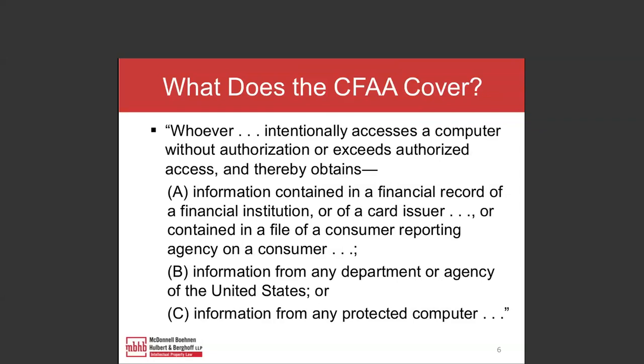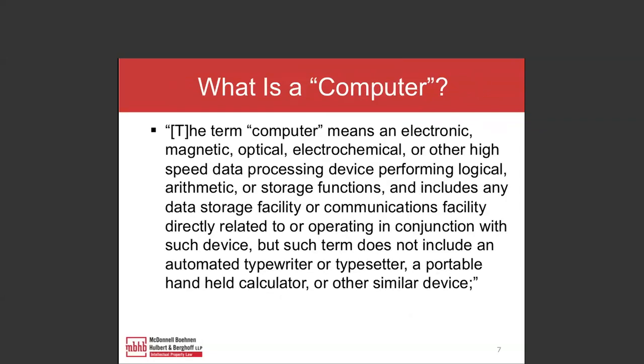The first issue is: what is a computer? The definition is at 18 U.S.C. section 1030(e)(1). At the time, it was a desktop. The definition's scope is revealed by its ending, which includes 'an automated typewriter or typesetter, a handheld calculator, or other similar device.' What would be considered a computer today would include your cell phone, an iPad or other tablet, as well as a computer itself.